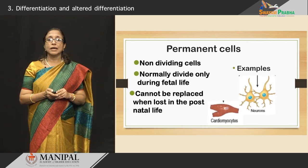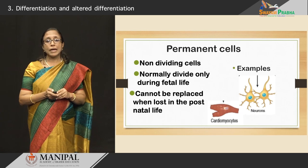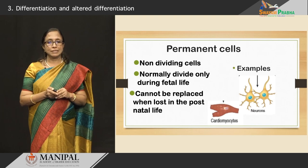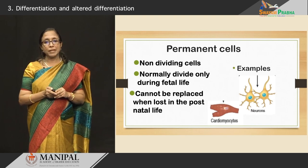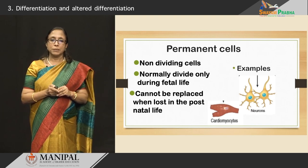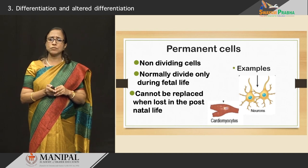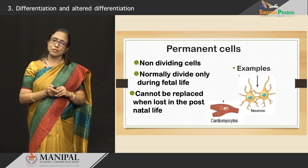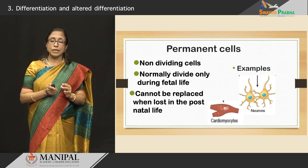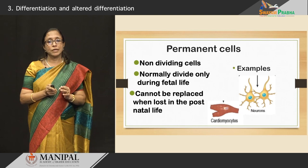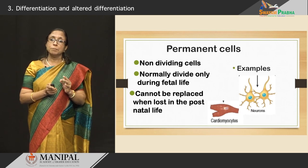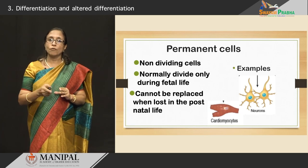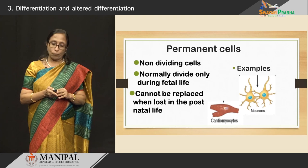The next group of cells are the permanent cells — they are the non-dividing cells. Normally they divide only during fetal life and cannot be replaced after birth. Examples include the neurons, cardiac muscle cells, and retinal cells. However, with recent research, even permanent cells are said to have a partial tendency for regeneration.